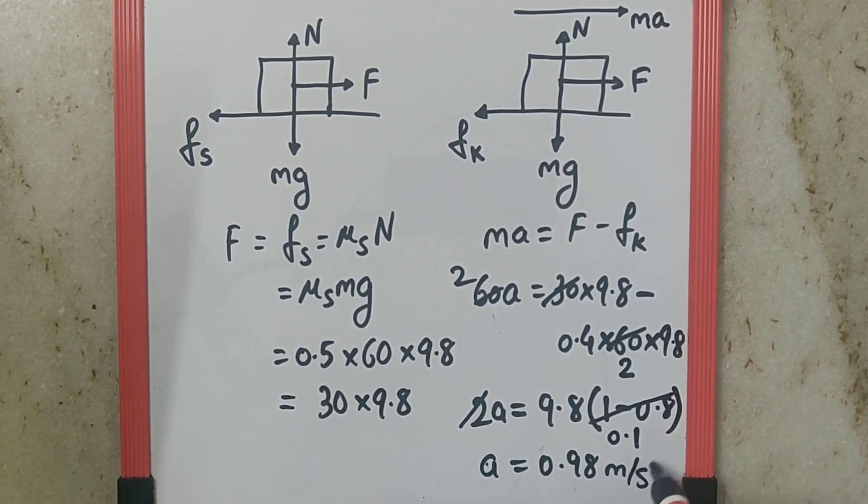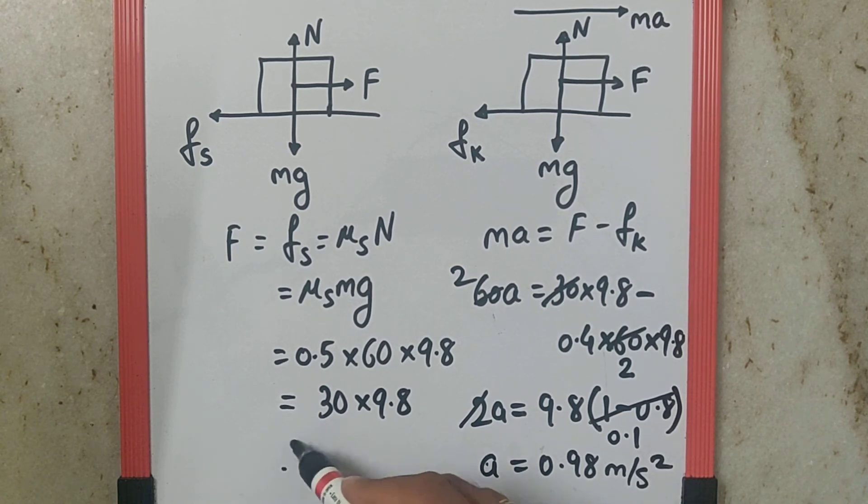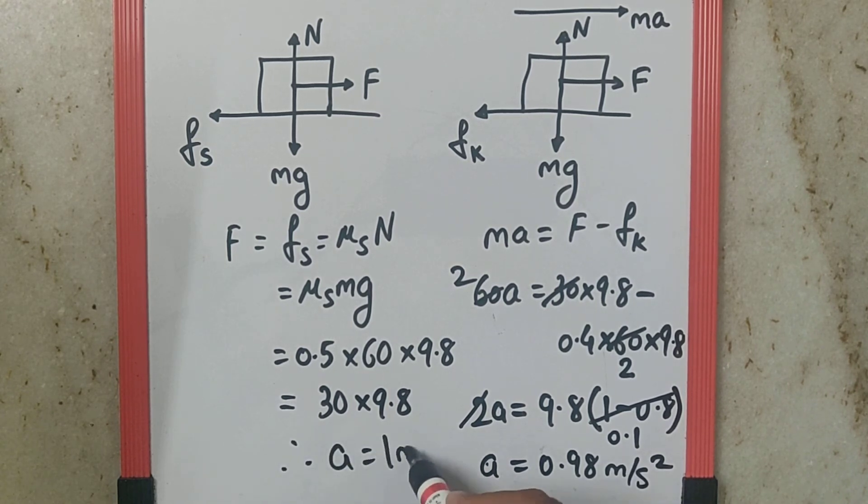which can be rounded off to 1. So, acceleration is 1 meter per second square as the final answer.